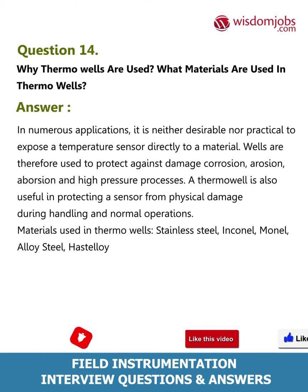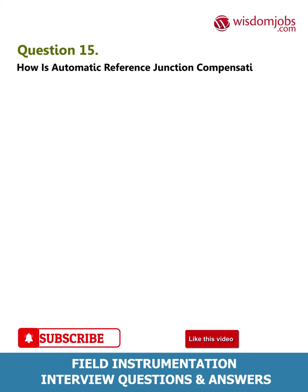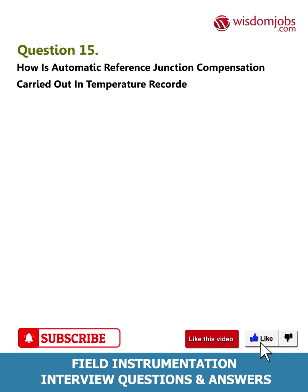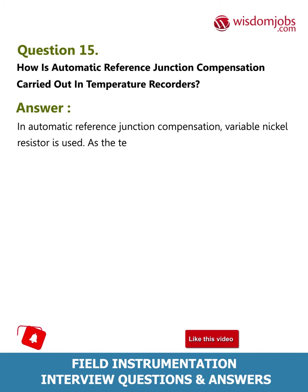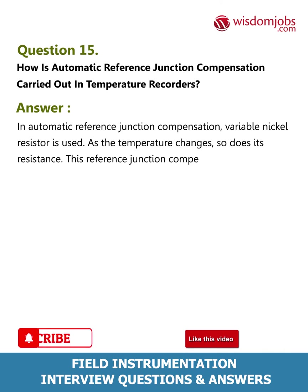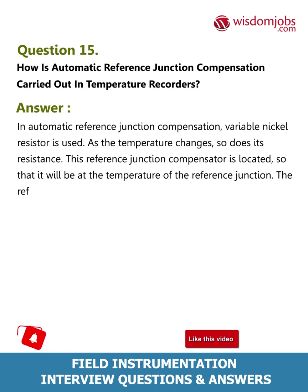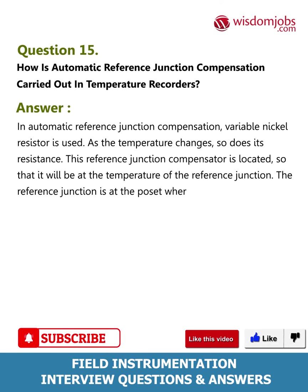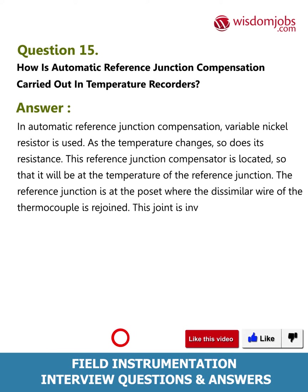Question 15: How is automatic reference junction compensation carried out in temperature recorders? Answer: In automatic reference junction compensation, a variable nickel resistor is used. As the temperature changes, so does its resistance. This reference junction compensator is located so that it will be at the temperature of the reference junction. The reference junction is at the point where the dissimilar wires of the thermocouple are rejoined, which is invariably at the terminal strip of the instrument.